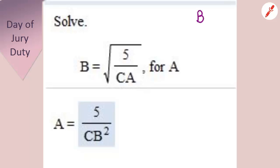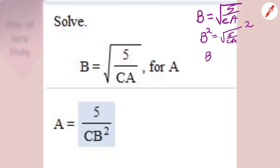So we start off with the equation. Now, I need to get A out from underneath the radical, so let's square both sides. So we'll have B squared equals 5 over CA.